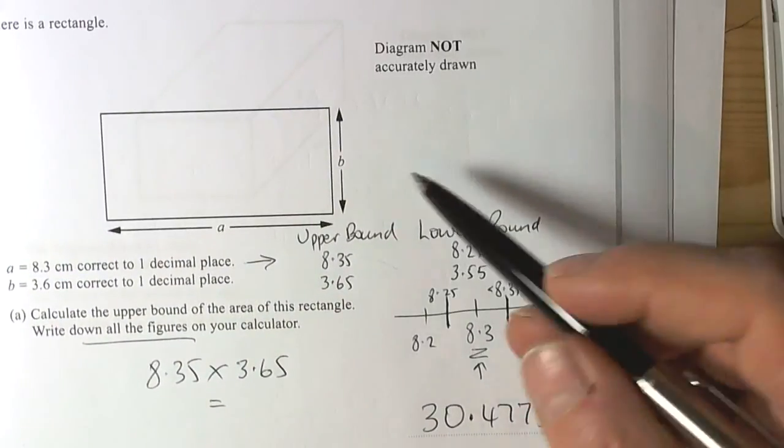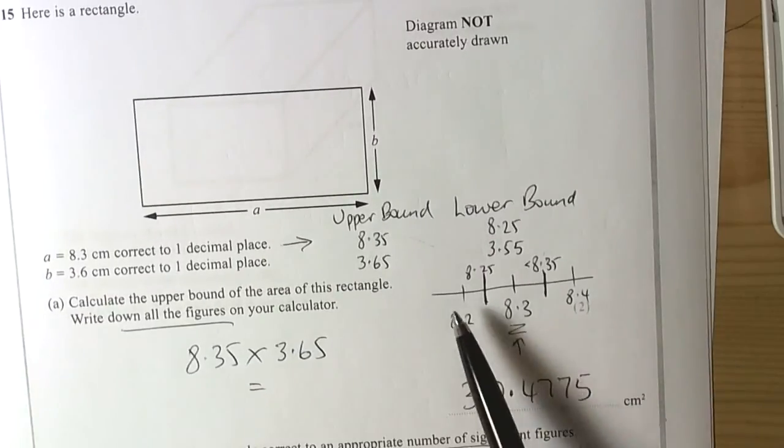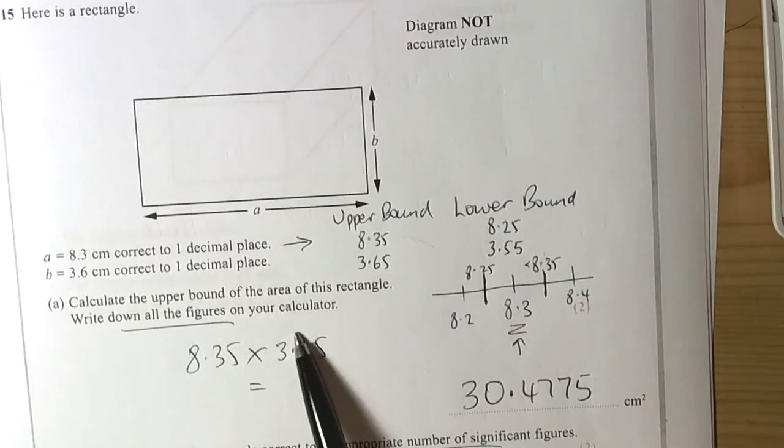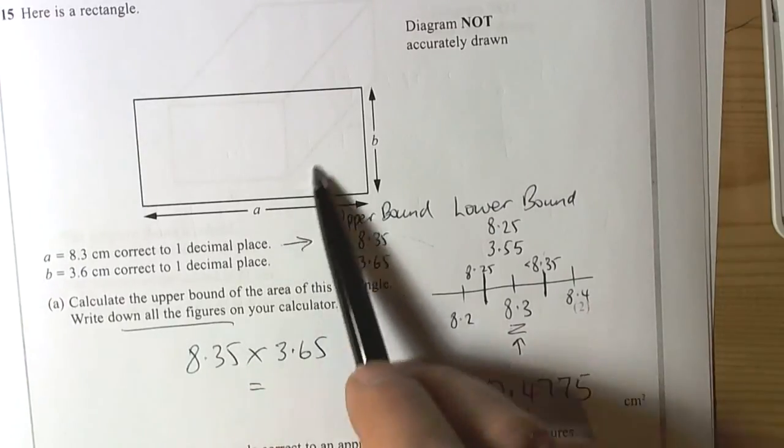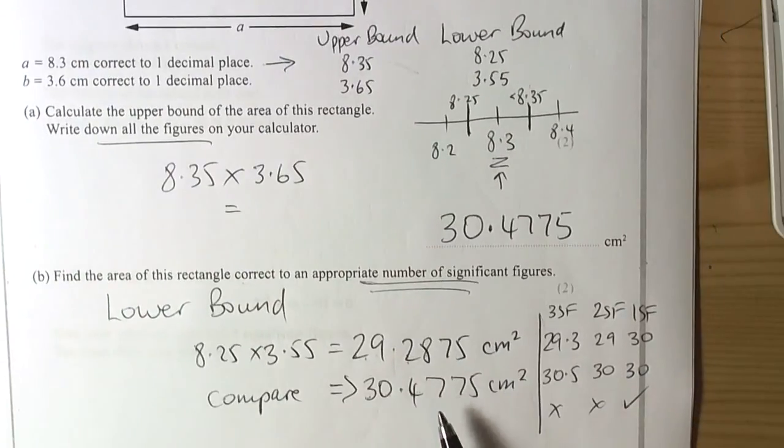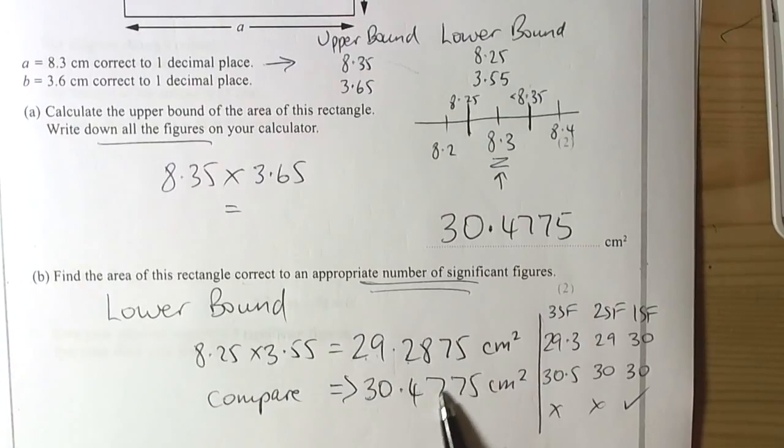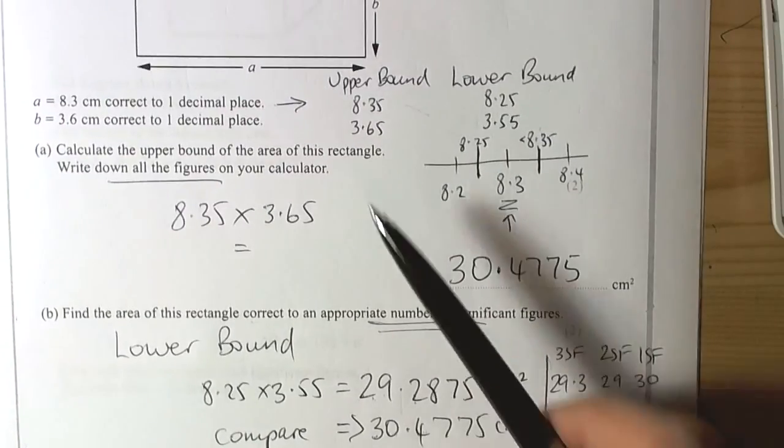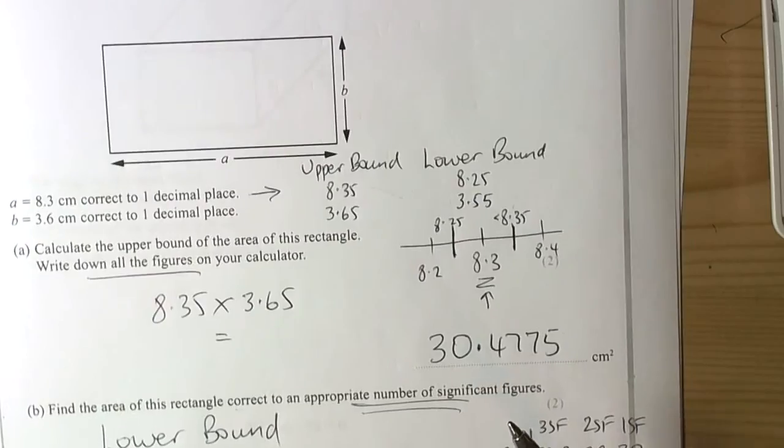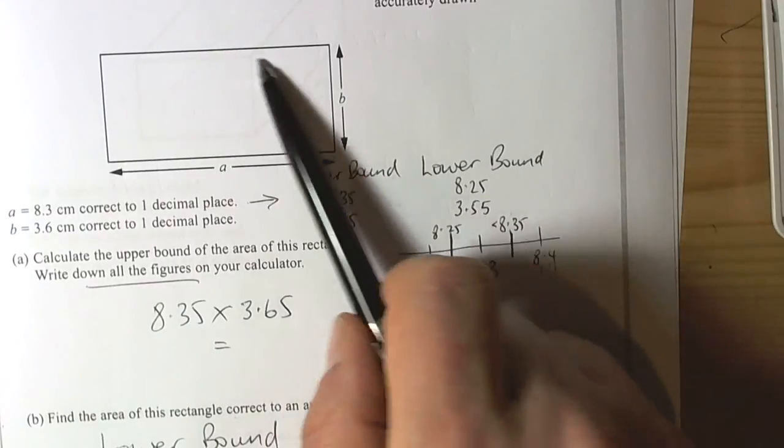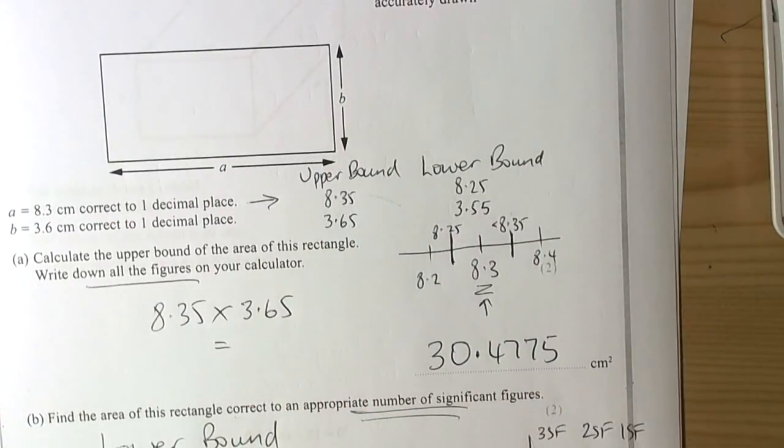That's an example of using the upper bounds and lower bounds, and recognising how we can calculate the upper bounds and lower bounds of areas of rectangles, and then comparing the two values, so the lower bounds and upper bounds, to write down what would be a sensible area to say. So for this particular rectangle, we'd say that the area is 30 square centimetres, given these two values here.